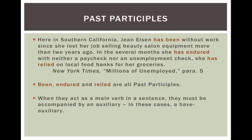When past participles act as the main verb in a sentence, they have to be accompanied by an auxiliary. We see the same auxiliary in this passage: 'has,' 'has,' and 'has' — and that gives us the tense. Past participles like 'endured' look like past tense verbs, but you can't say 'Jean Eisen been without work since she lost her job' in standard English. A past participle will always occur with an auxiliary if it is the main verb in a sentence.